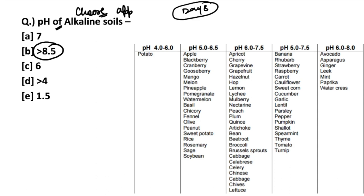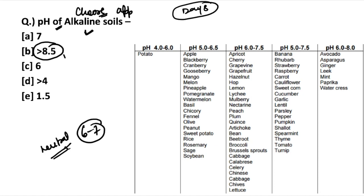The pH of alkaline soil: 6 to 7 is actually considered the neutral range and cannot be said to be alkaline soil. The range of 5 to 6 or 7 is considered a little neutral. But if we are generally asking the pH of alkaline soil, the answer is greater than 8.5. As per the given options, it's not 7 — remember this.